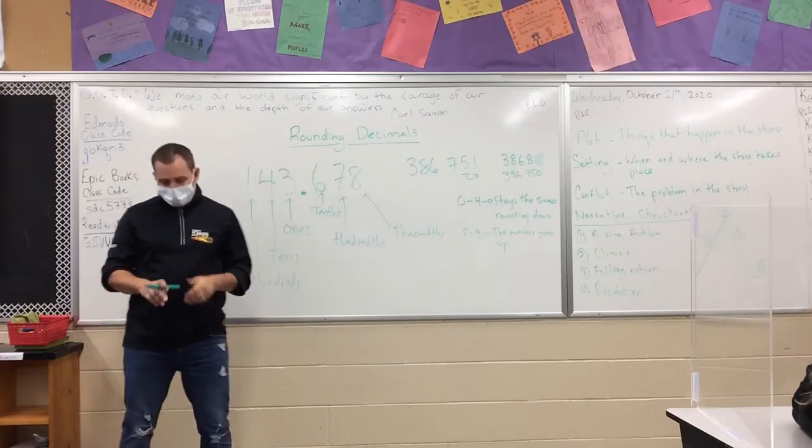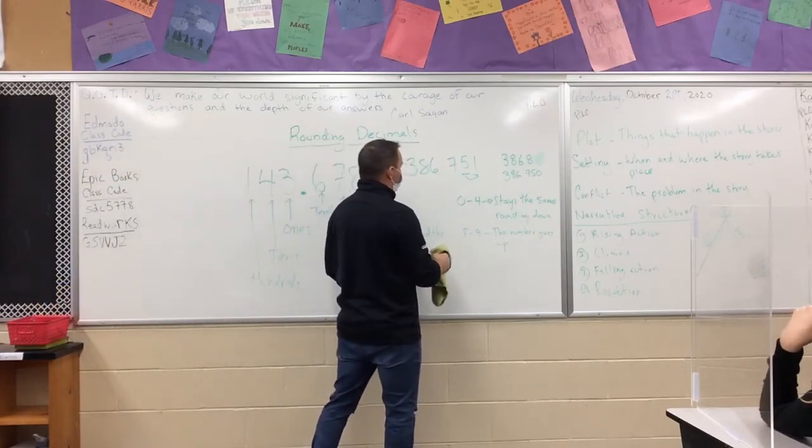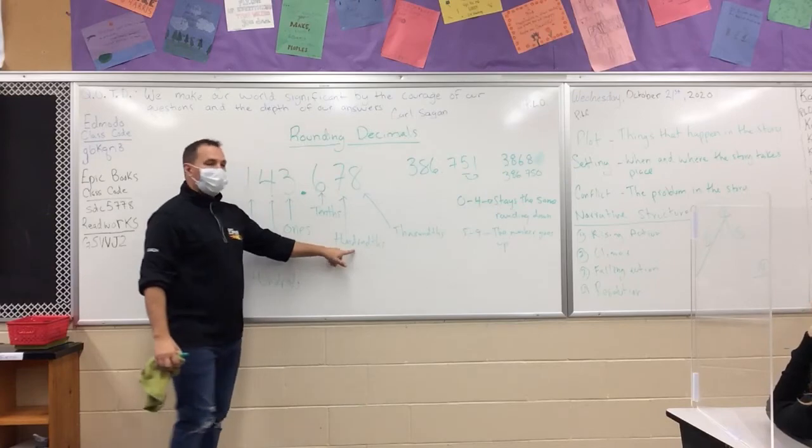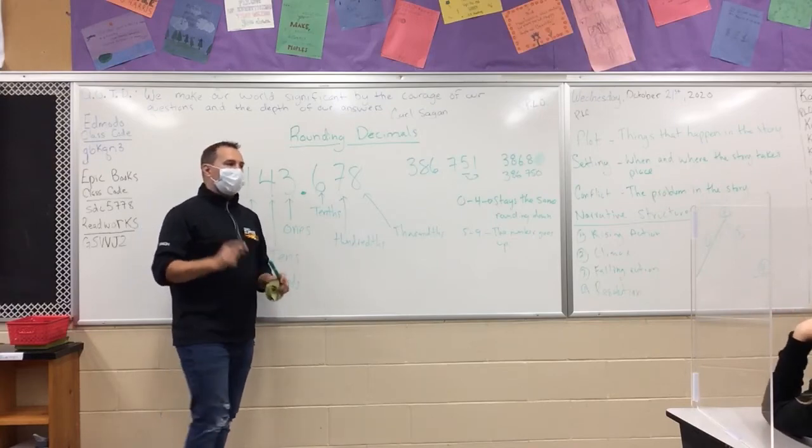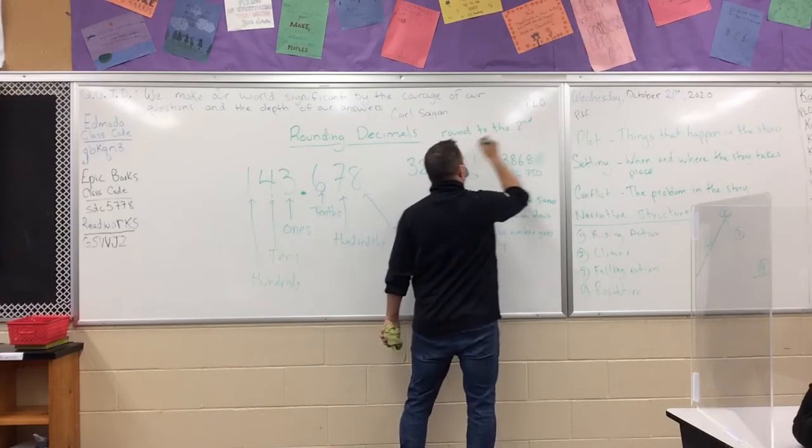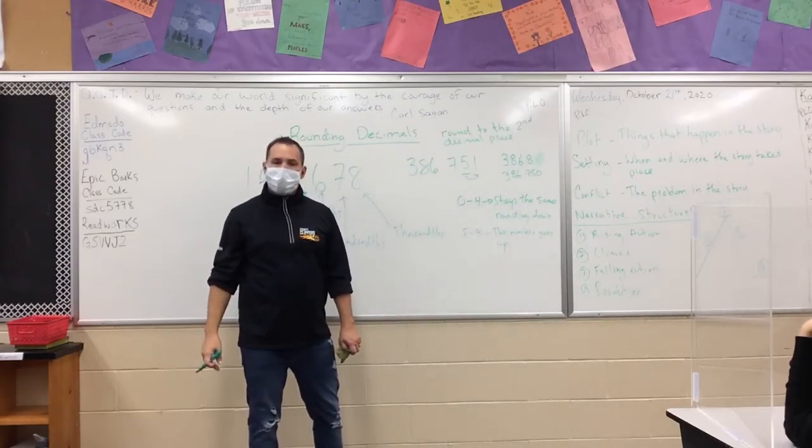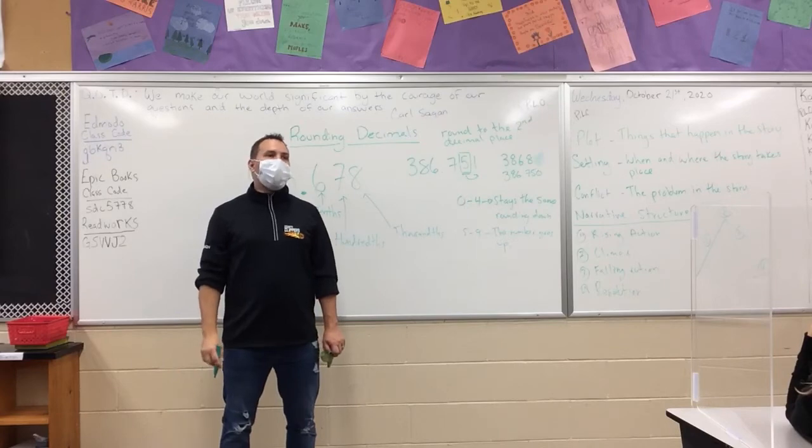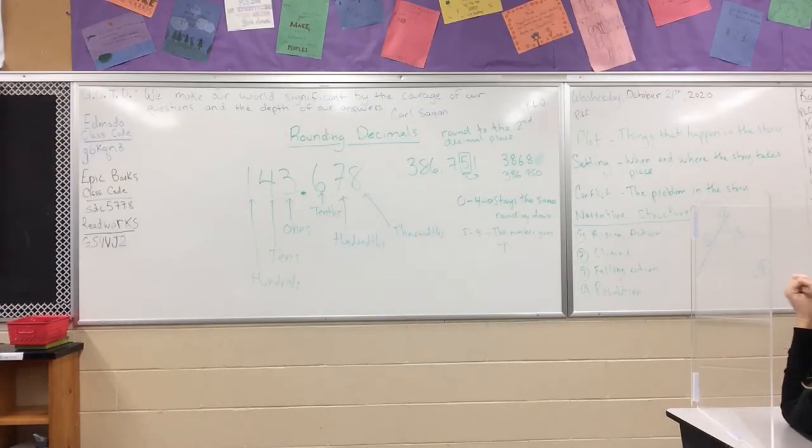Sometimes math will throw you a weird way of looking at stuff. Here we said round to the nearest hundredth when we were looking at the 5. Sometimes in your math textbooks you'll see things that will say round to the second decimal place. If it says round to the second decimal place, it just means from the decimal go over 2, that's the one you're going to round, so you've got to look at the one beside it.